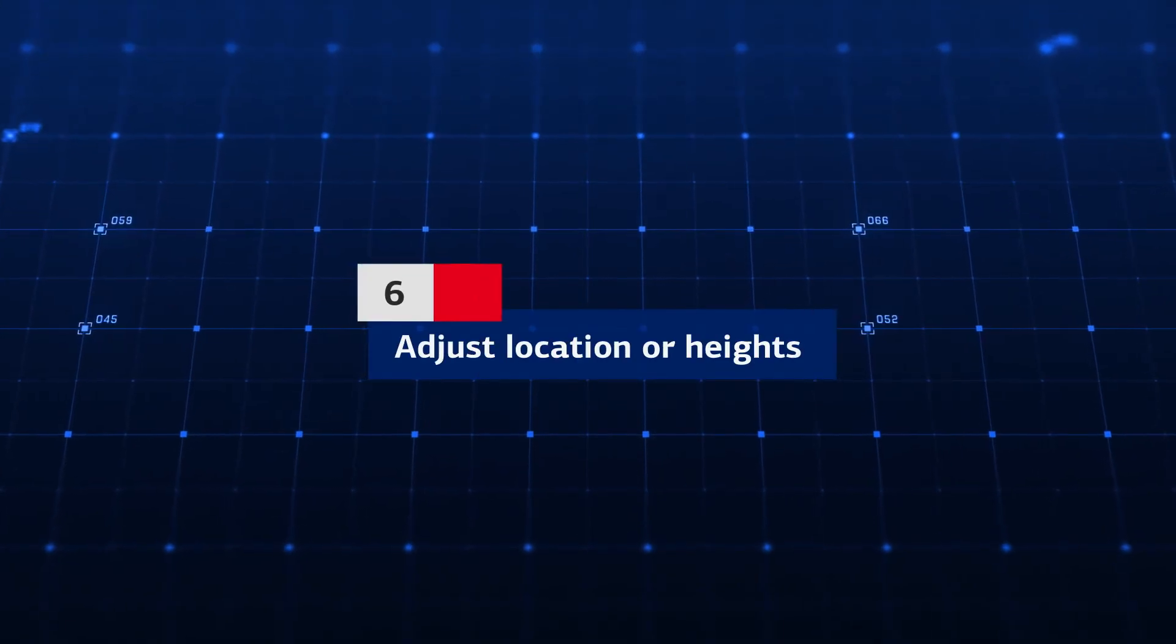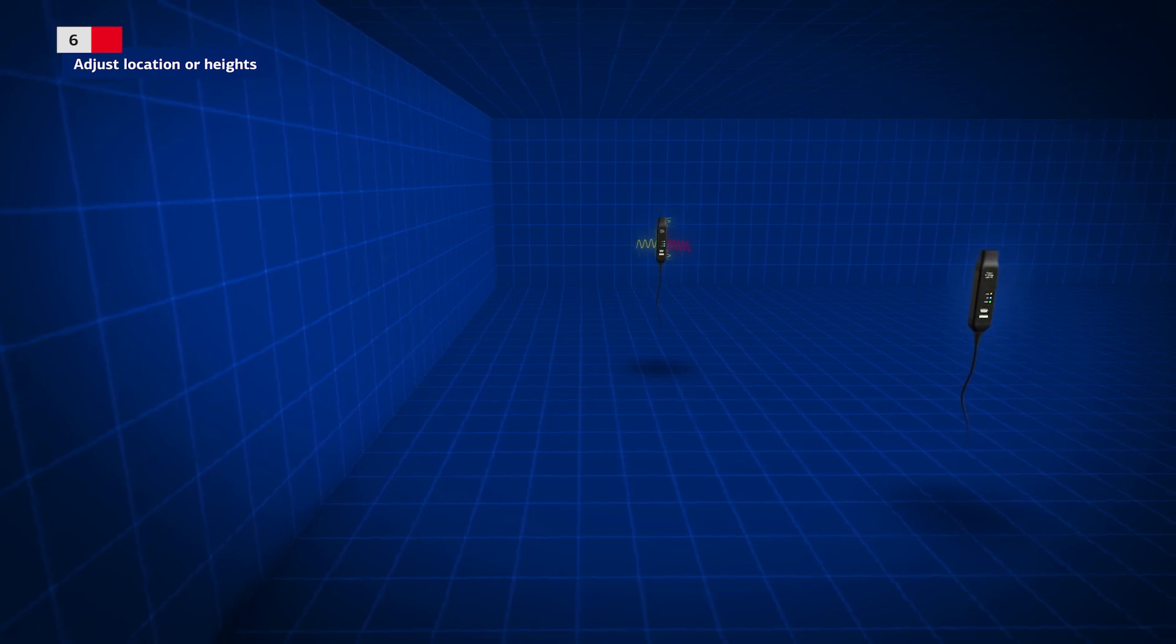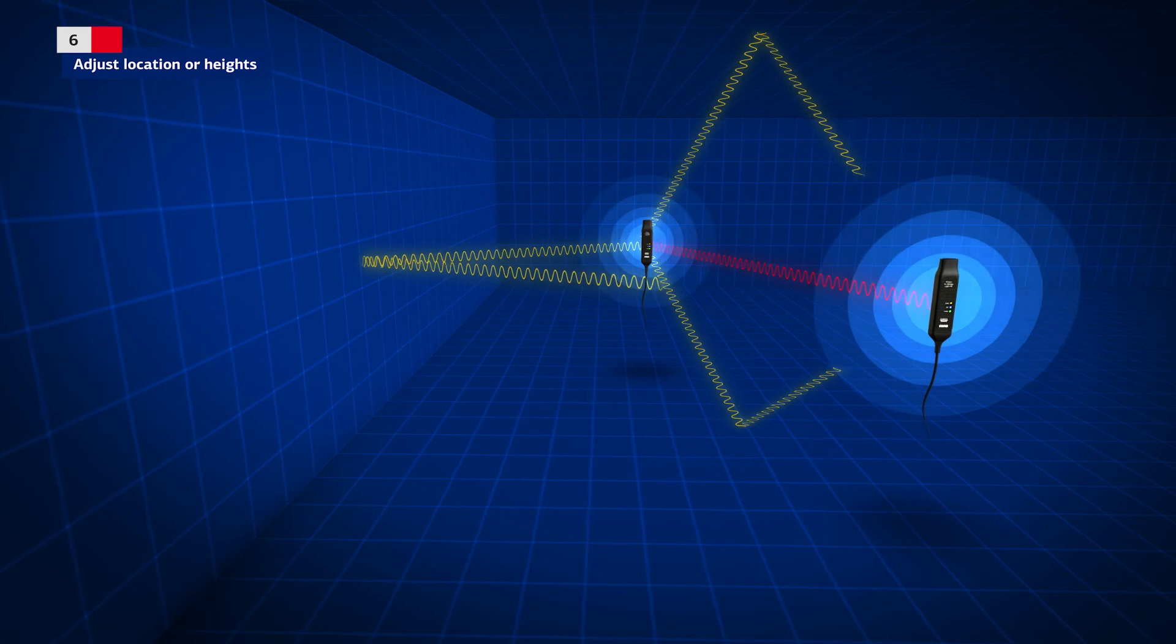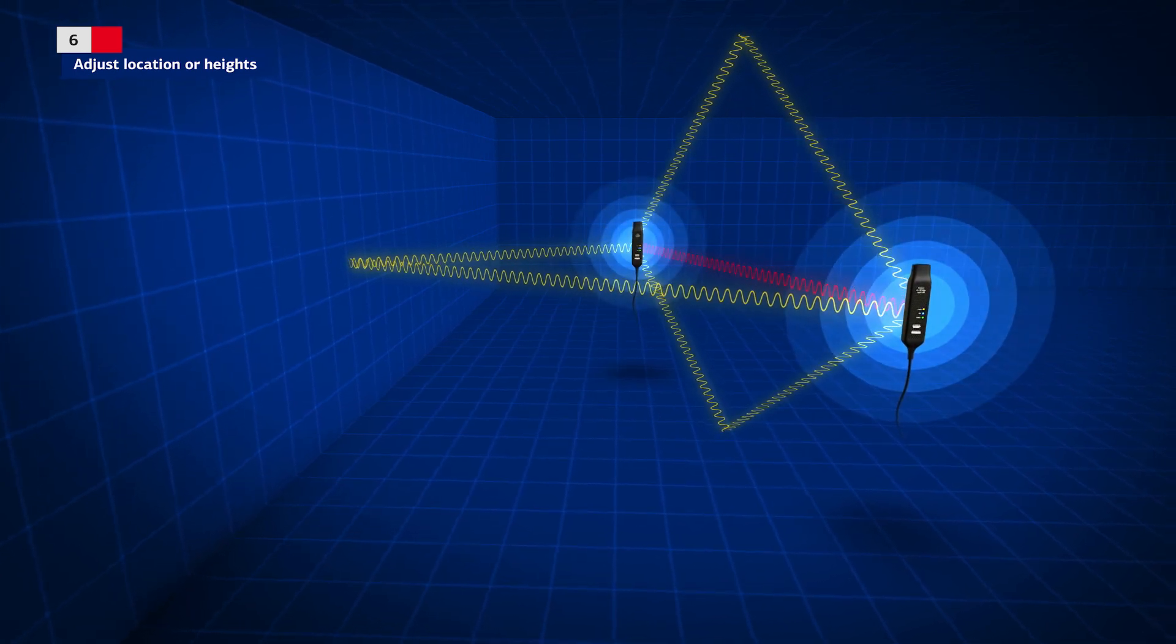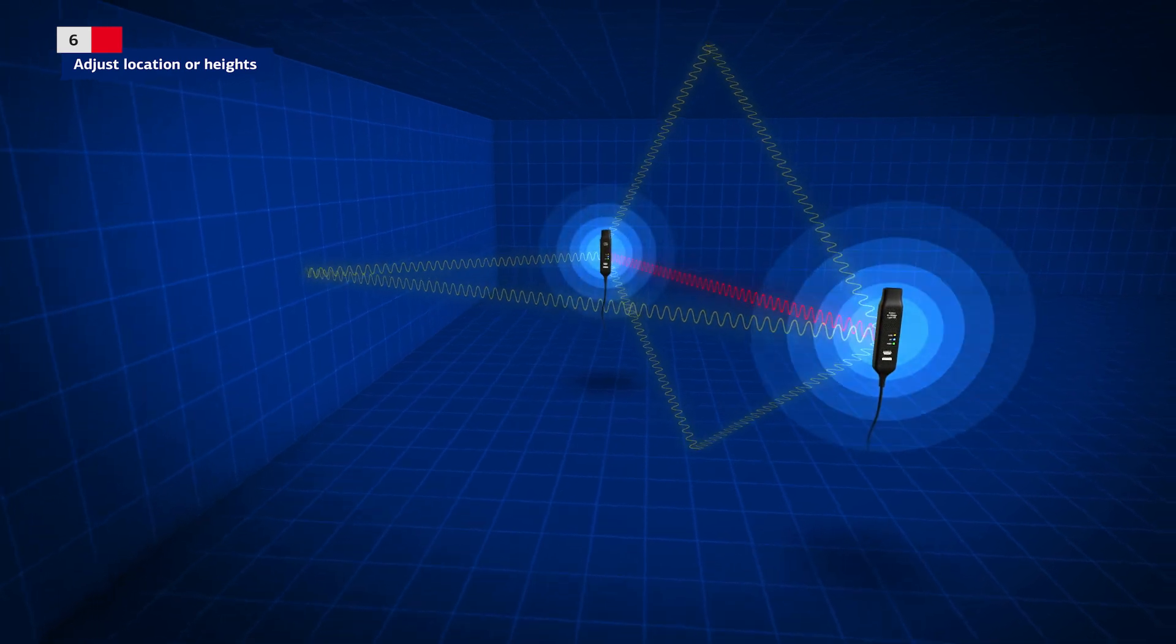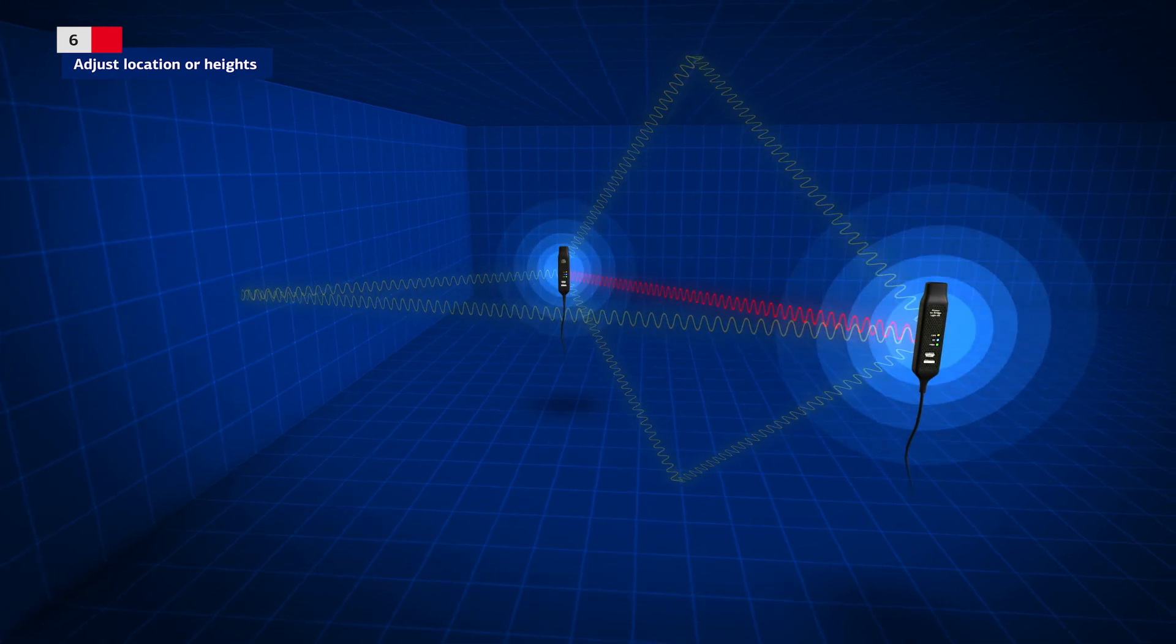Rule 6: Adjust location or heights. There may be locations where the signal level is weakened due to interference caused by reflected radio signals in ground, floor, walls and ceiling, so-called multi-path interference. This can be overcome by slightly changing the location of one of the AirBridge units, or both.